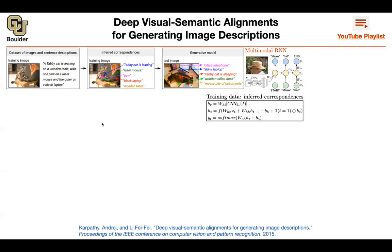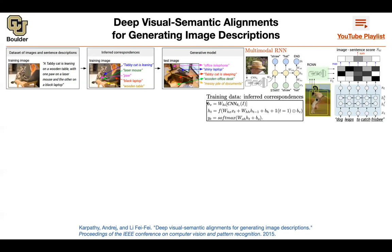For that, you need to embed two different entities into the same vector space, and then you can start comparing things together. You take your image, you embed it in a vector space. You take a sentence, you embed it in the same vector space. Now that you have two vectors living in the same space, you can compare them — perhaps using cosine similarity. And that's exactly what we're doing here.